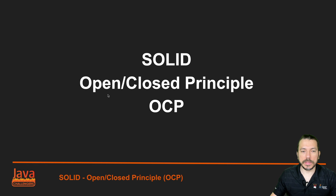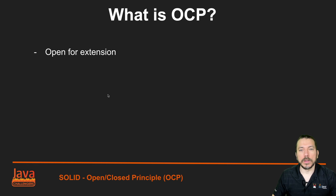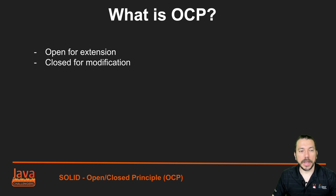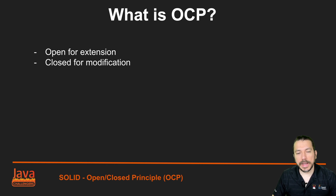Let's explore the concepts of the Open Closed Principle. What is OCP exactly? It means that the code is open for extension — in other words, we can easily add new features to classes, methods, and modules because we don't need to change the existing code. And closed for modification means that we don't need to change the code of a method or a class; we just need to change the dependencies.